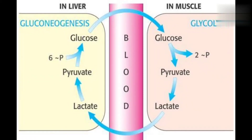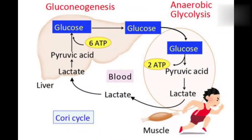Let's look at the proper cycle steps. In the process, we have skeletal muscle producing lactate. The lactate goes into the blood and to the liver. In the liver, lactate is processed.